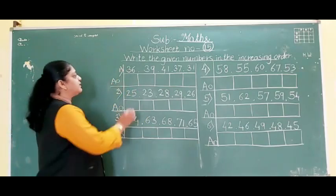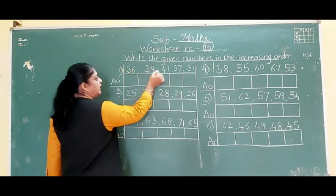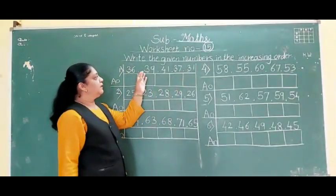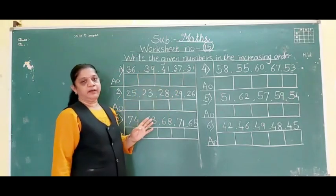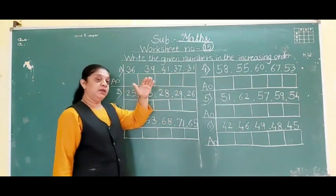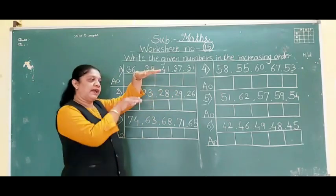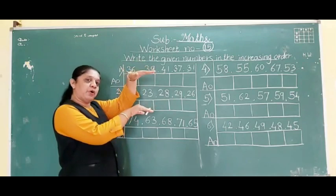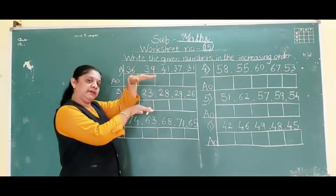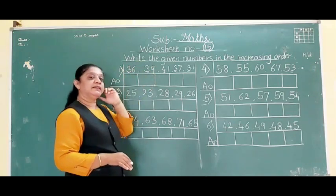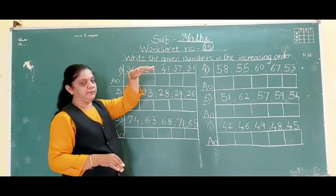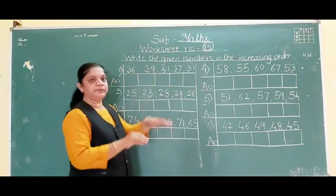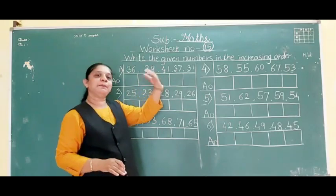See here, first look at the first digits: 3, 3, 4, 3 and 3. First digit is 3 and 4. Above numbers are always small and below numbers are always big. So 3 is the small number and 4 is the big number, meaning 41 is the big number and will come last.